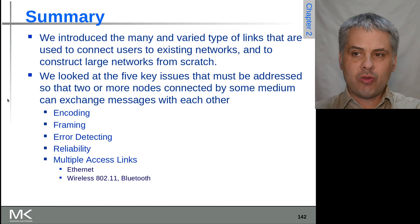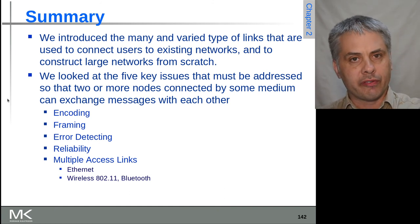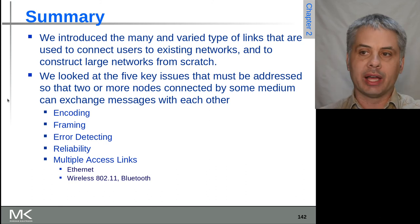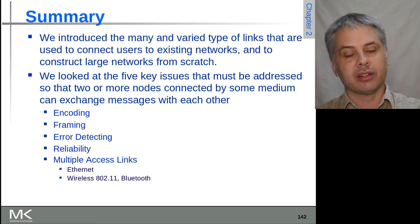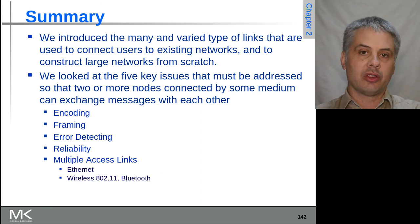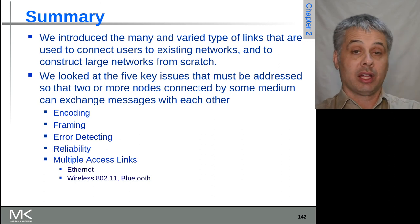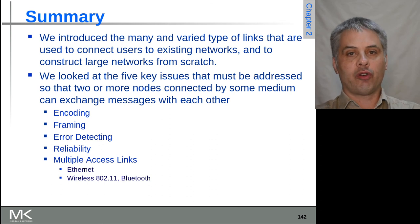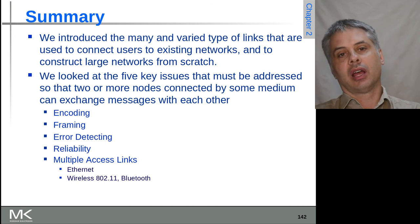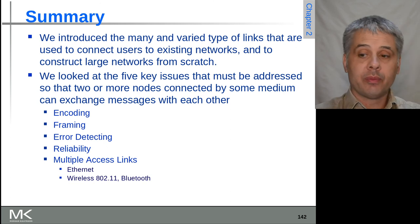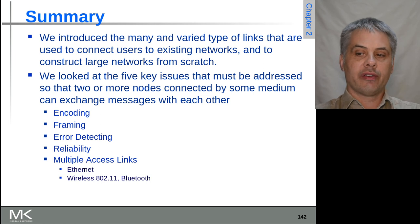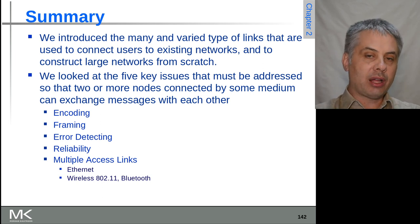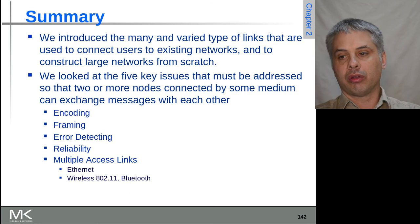In this chapter we've looked at a broad range of link types across the families of wired and wireless, and how we actually transfer data over these. We've covered encoding binary data, forming frames from bits, detecting errors, creating reliable data streams, and doing efficient multiple access — that is, sharing a link among multiple users.